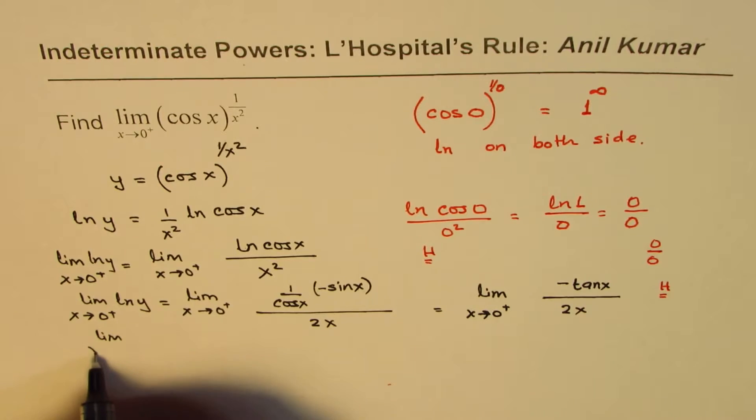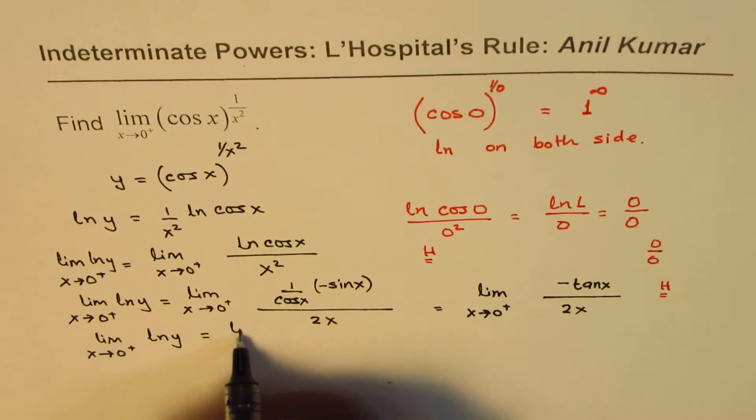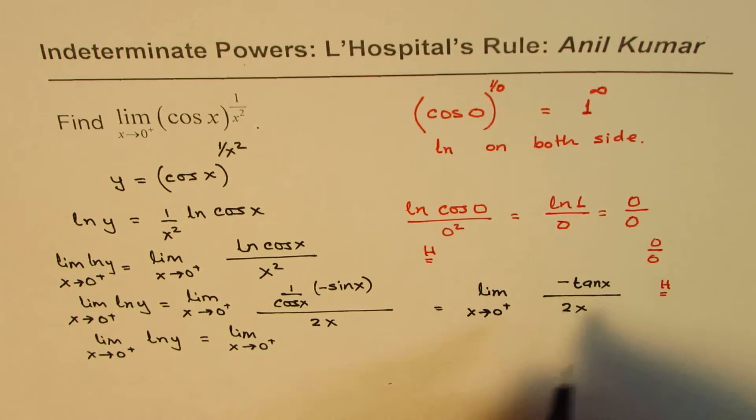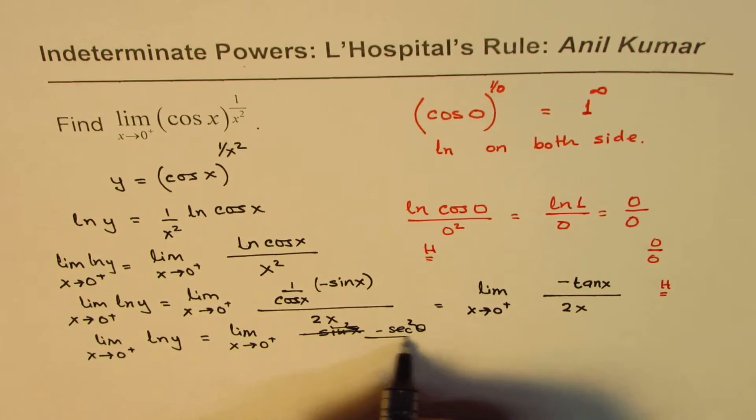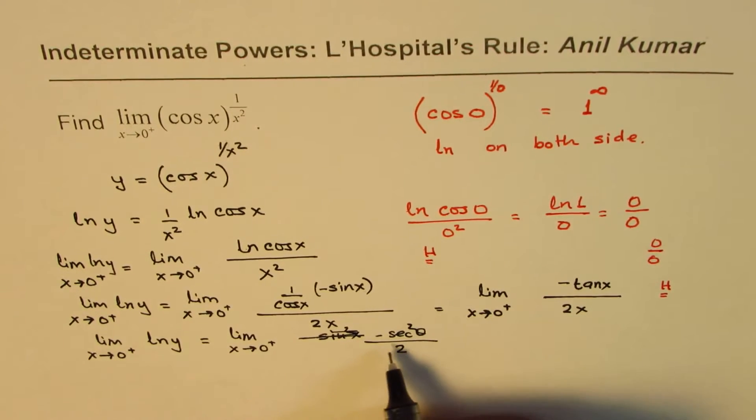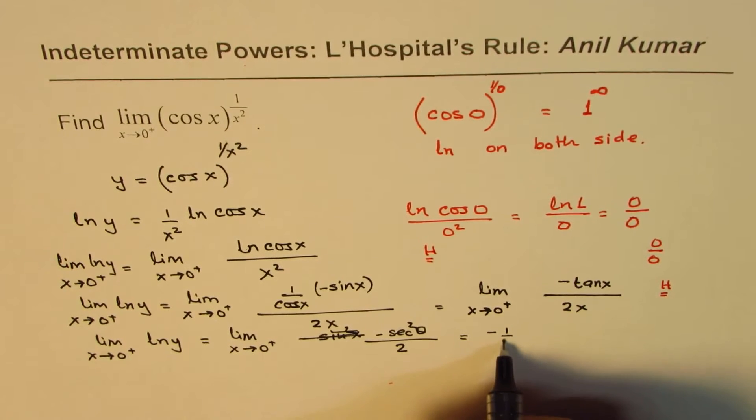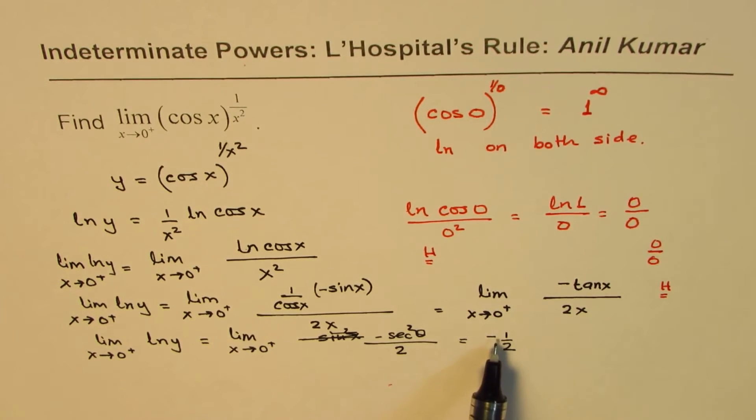So we get limit x approaches 0 plus for ln y equals limit x approaches 0. Derivative of tan x is sec squared x. We get minus sec squared x divided by 2. Now, sec squared x, if I substitute 0 now, what do I get? I get 1. So here I get minus 1 over 2. So what we get here is that the limit of ln y as x approaches 0 from the right side is minus half.